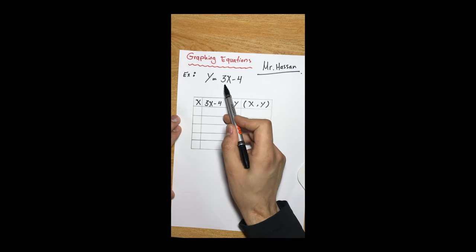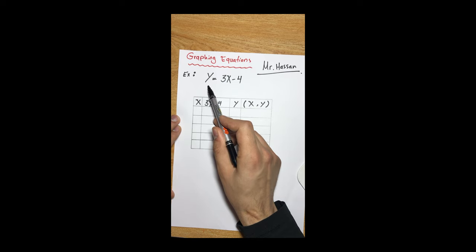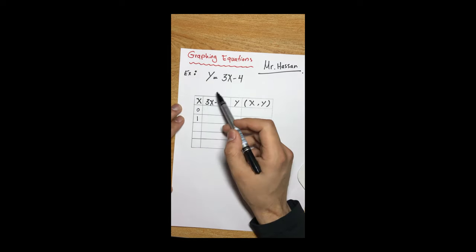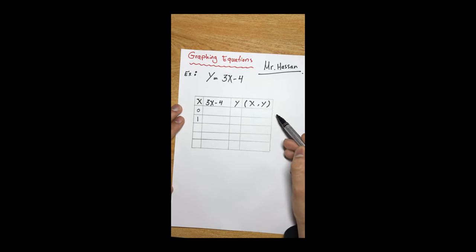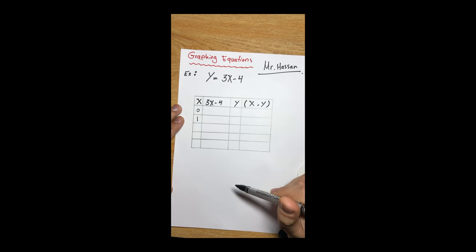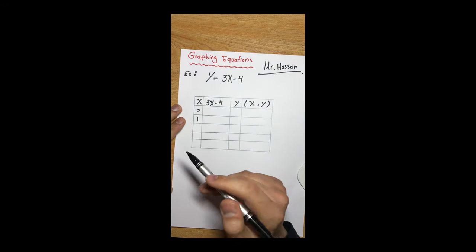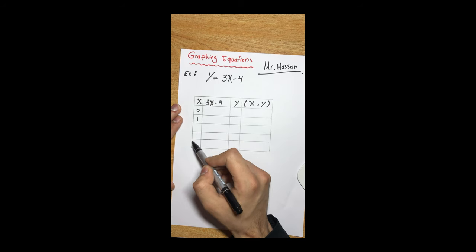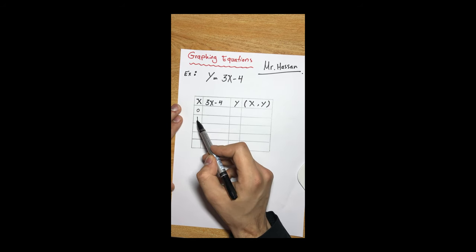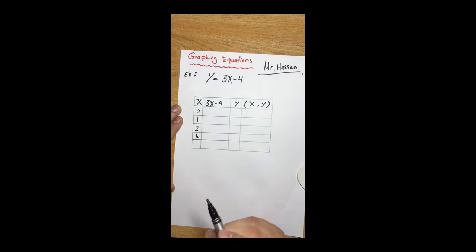To do this, we have to input a number for x so that we can find the corresponding value of y. In order to graph this linear equation, we need at least two ordered pairs — two points — and each point has an x and a y. To make a more precise graph, we need at least three to four points, so I prefer to start with x values of 0, 1, 2, and 3.